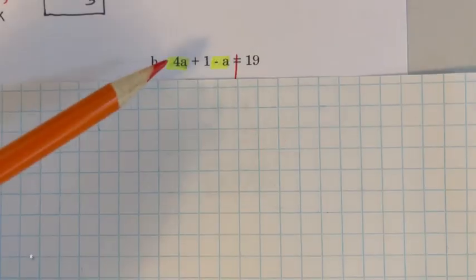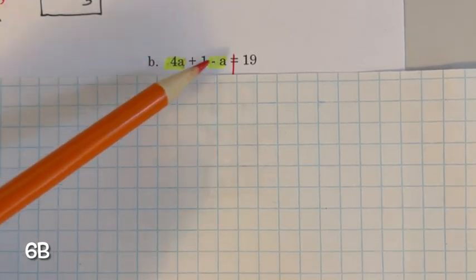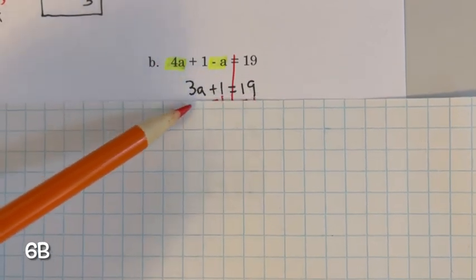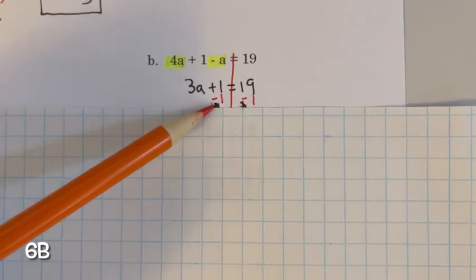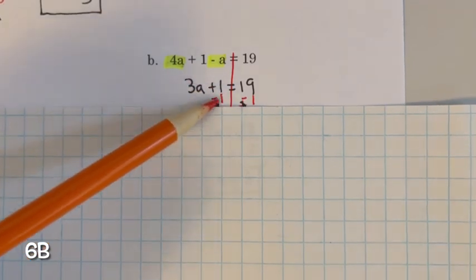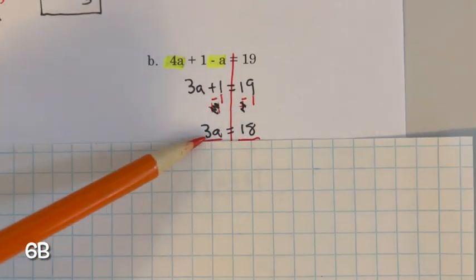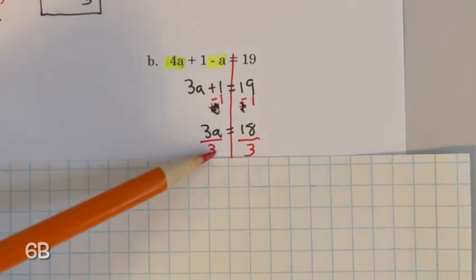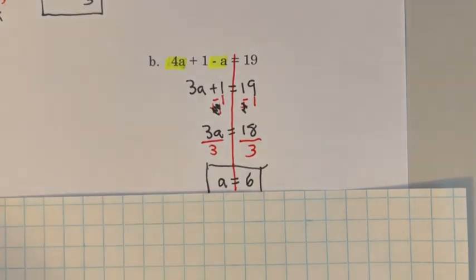For part B, we solve this equation. First, simplify by combining like terms: 4a minus a gives 3a. Then subtract 1 from both sides — that gives a zero pair, and 19 minus 1 equals 18. Now divide both sides by 3 — inverse property of multiplication — giving a equals 6.